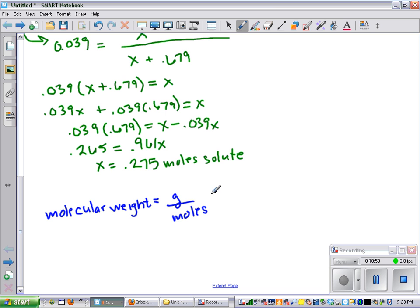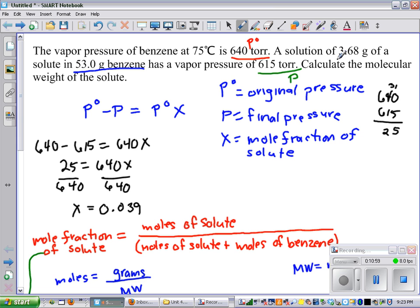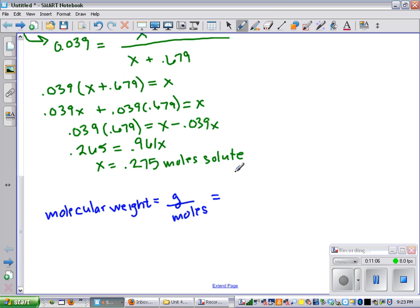And we know from back in the problem that we have 3.68 grams of the solute, and we just found out that we have 0.275 moles of the solute. So grams divided by moles equals 133.8 grams per mole. And that is the final answer.